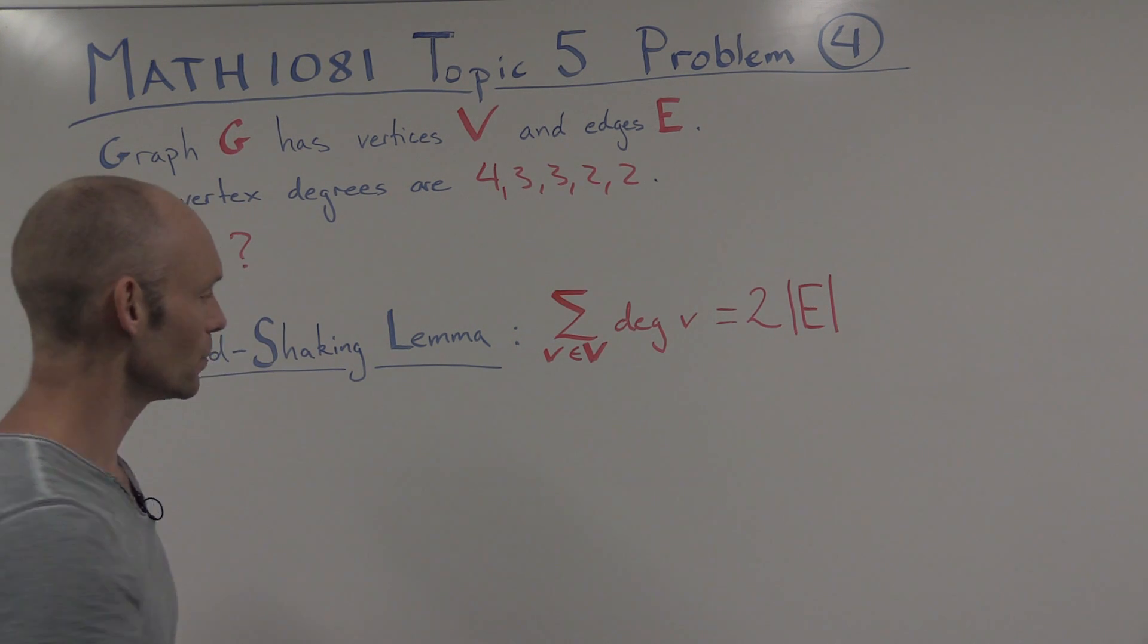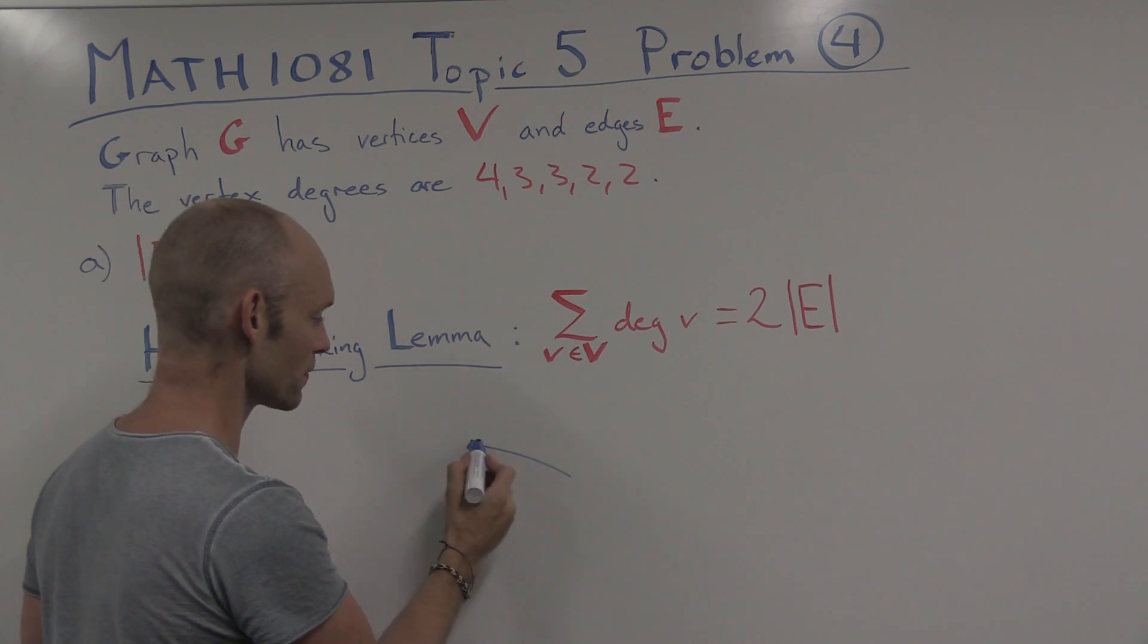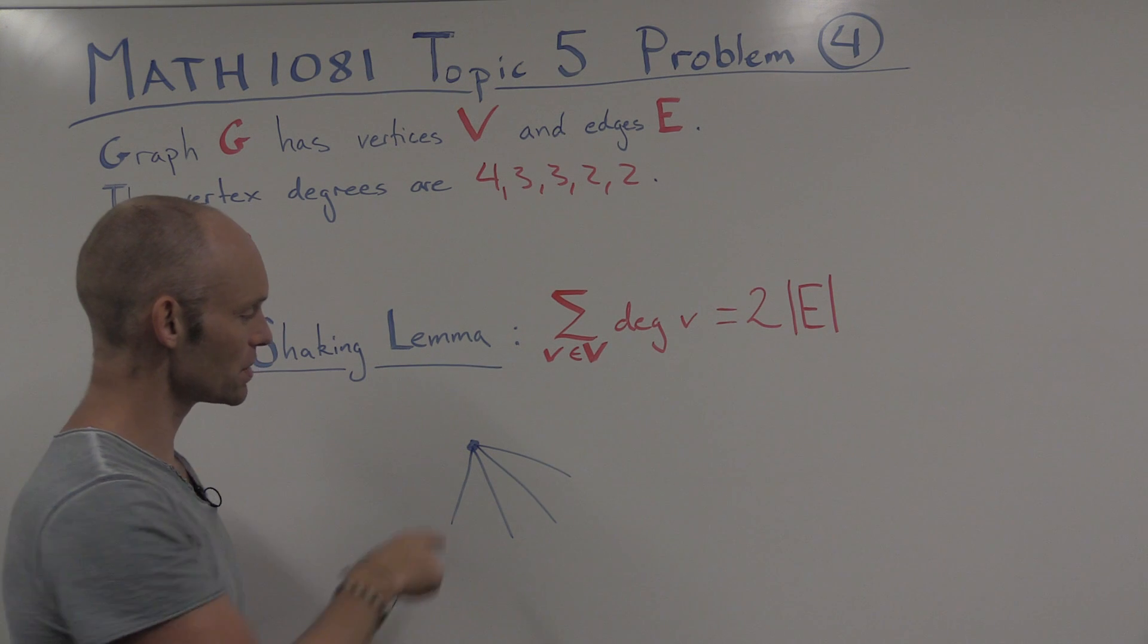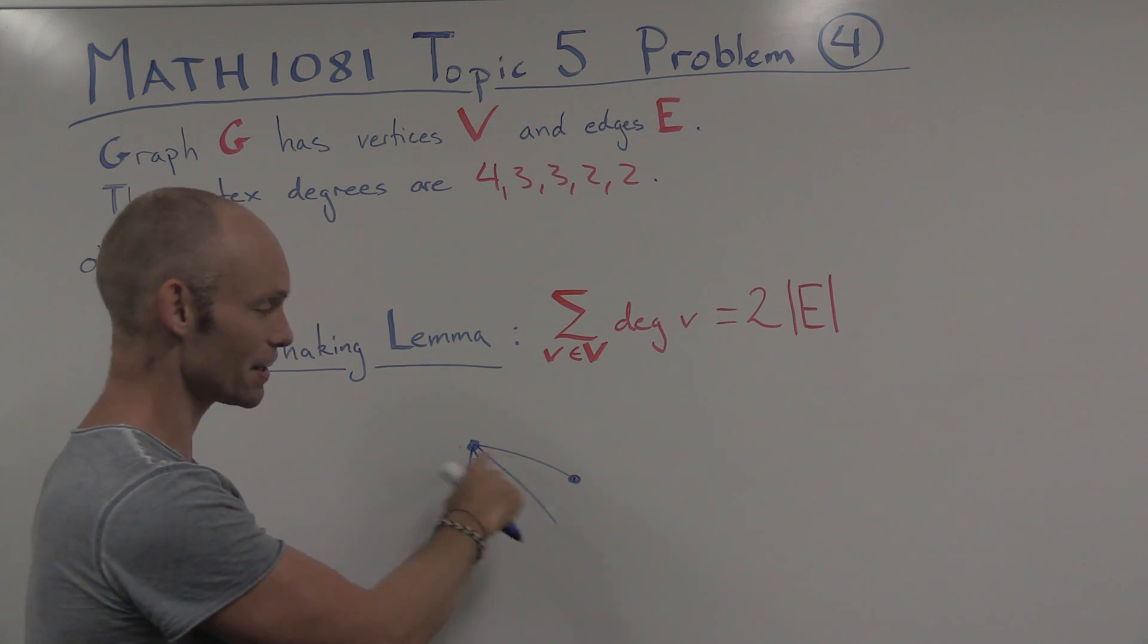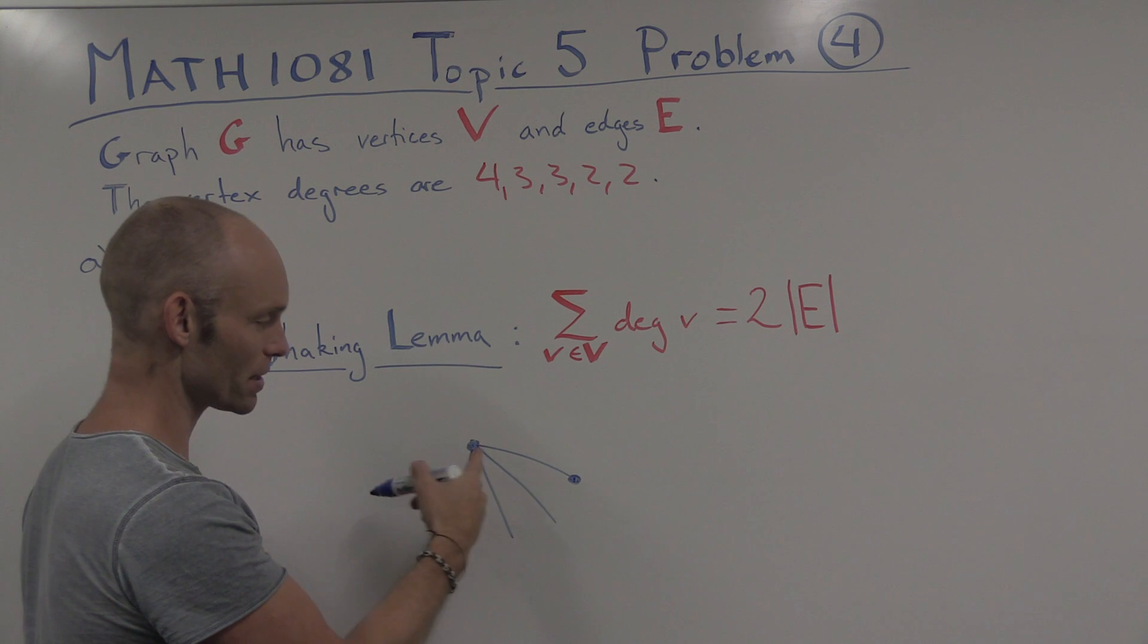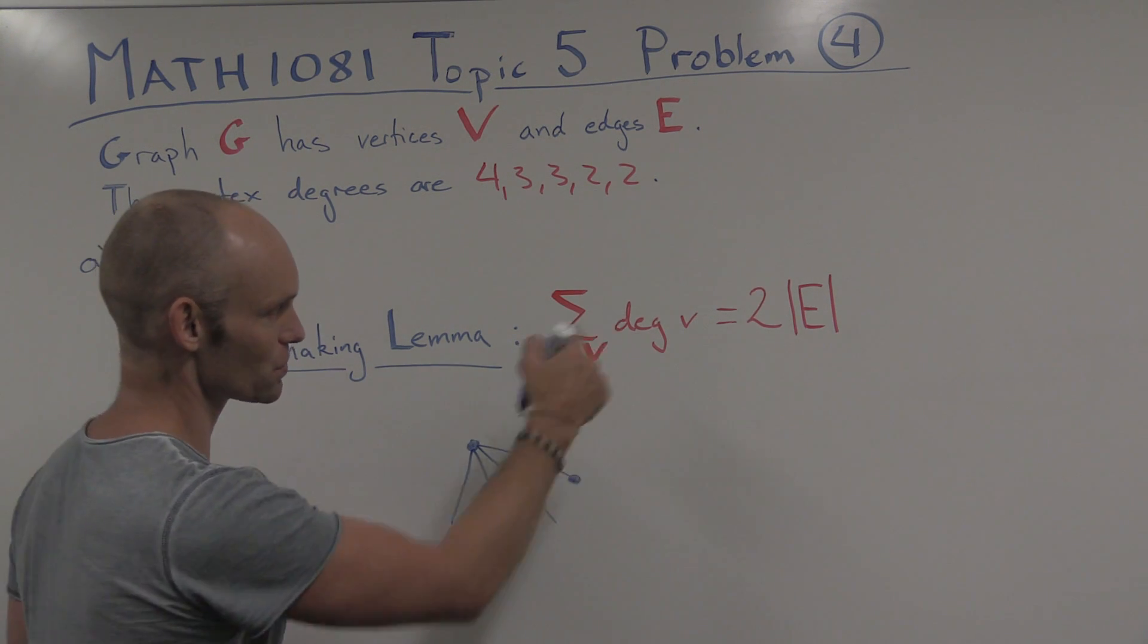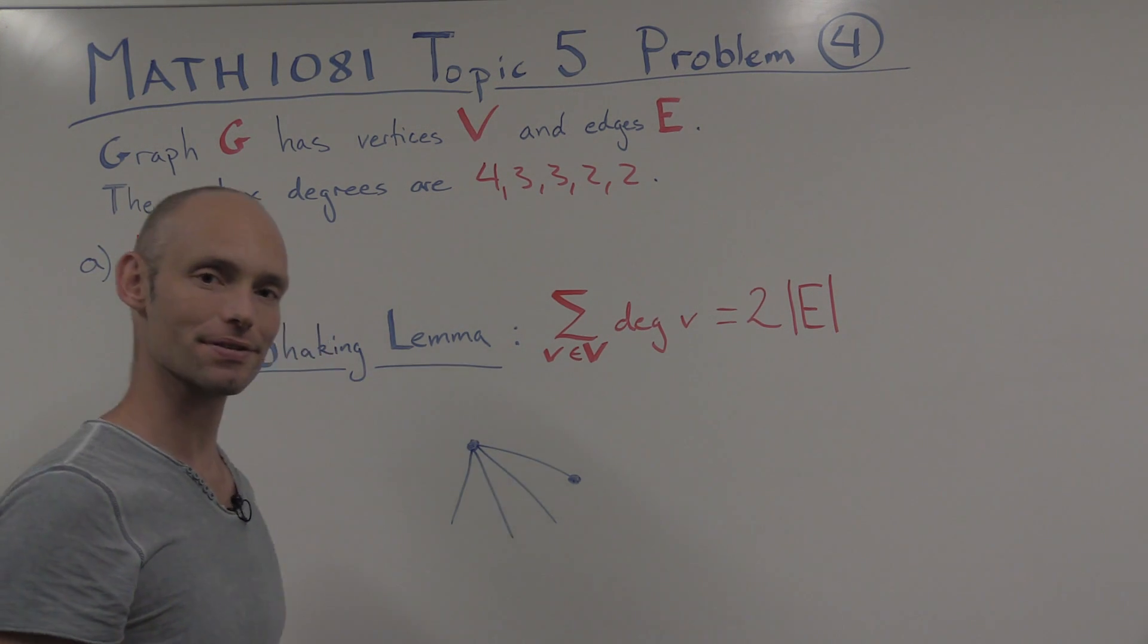And why is that? Well, if we look at all of the degrees of the vertices, so here's a vertex, and it might have, for instance, 4 degrees. And if we count the number of times it shakes hands, so to speak, with another vertex, so that's when there's an edge between them, then we'll be counting these edges twice. We'll be counting this edge for this vertex when it shakes hands with that vertex. But we'll also be counting this edge when this vertex shakes hands with the first one. So that's where you get that identity from. It's a simple but very useful little identity.